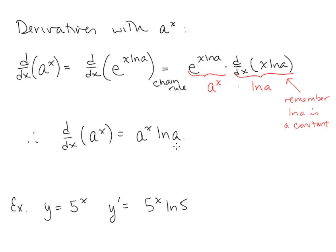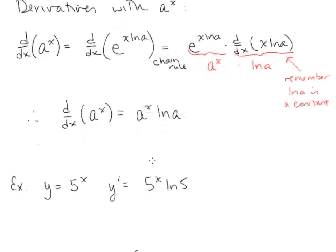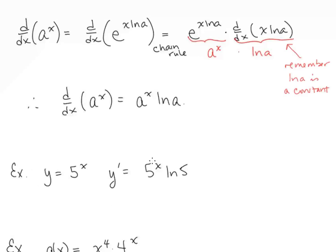Notice that this holds for the derivative of e to the x, because that would say the derivative is e to the x times ln e, and we know ln e equals 1. So for example, with y equals 5 to the x, y prime is going to be 5 to the x ln 5.